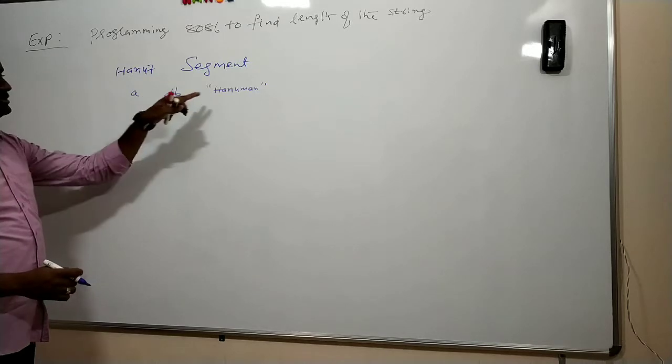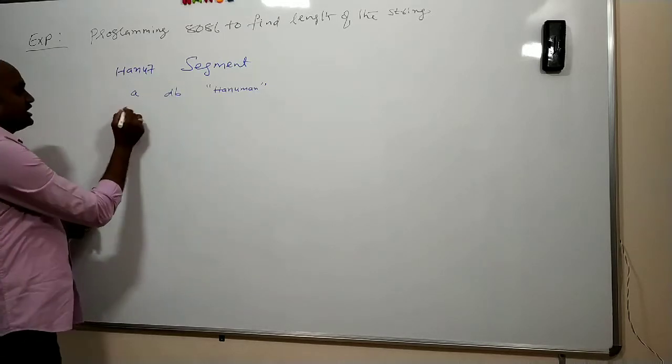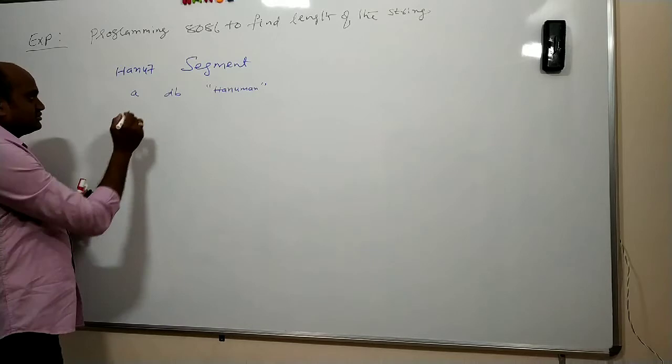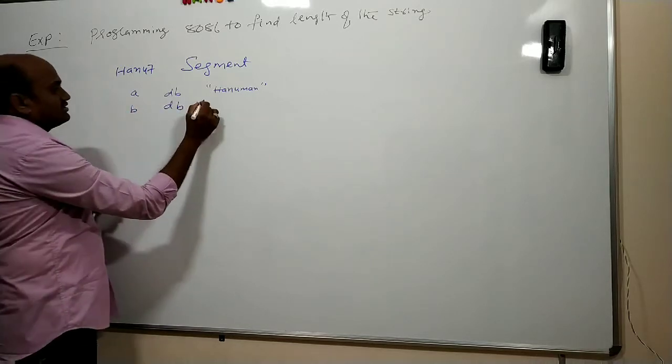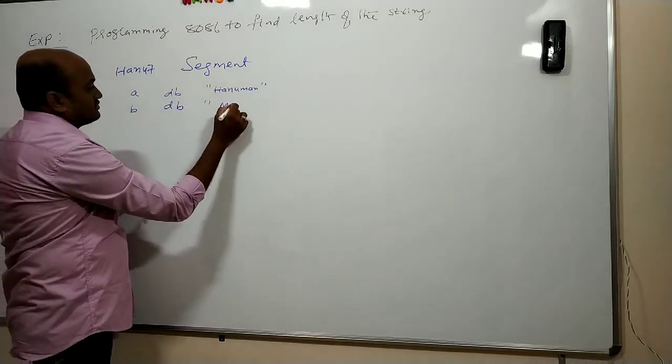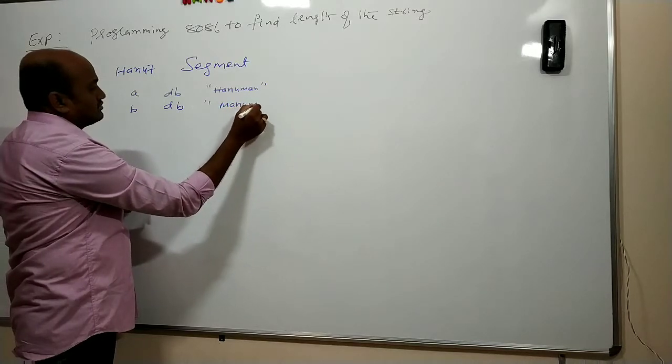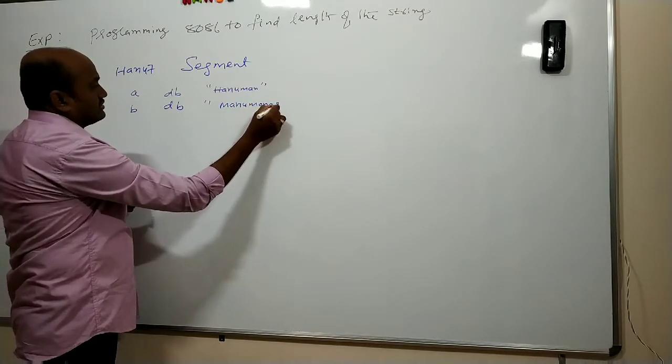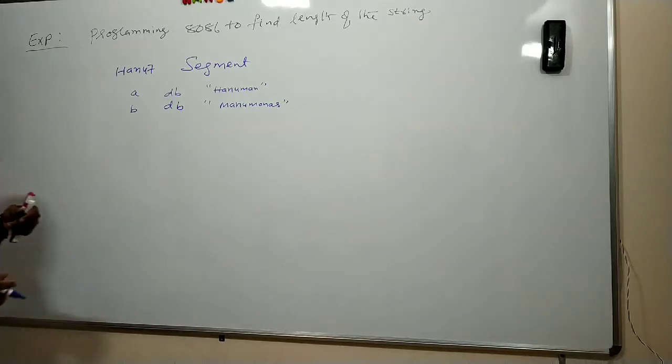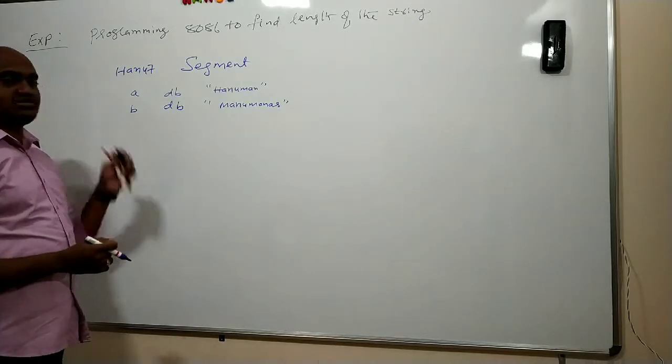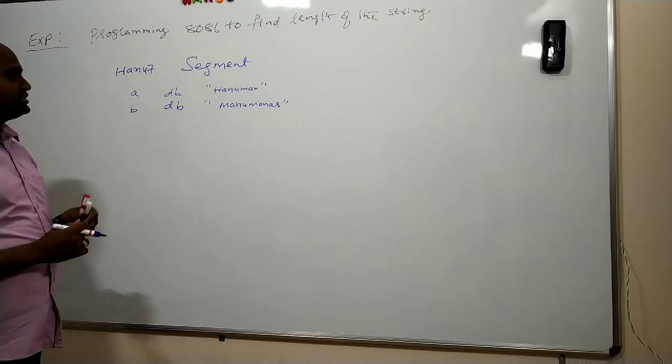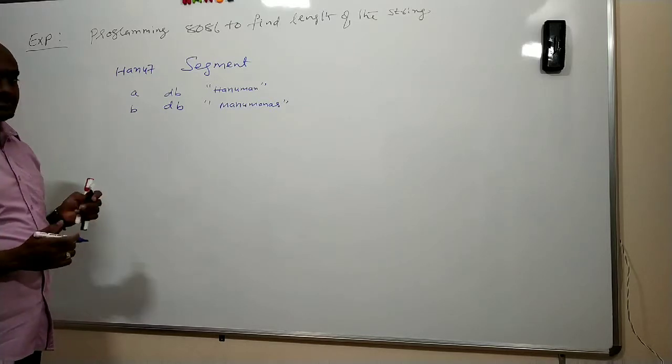So I define my input string like this: a db Hanuman. Similarly, I would like to define one more with the name b db another string. So totally there are two strings in my data segment for which I want to find out the length of the string.